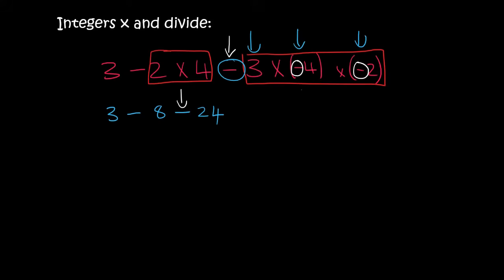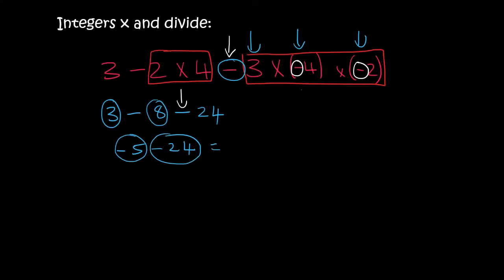Now we can move from left to right, only plussing and minussing. So if you have 3 rand and then you have to pay a total of 8 rand, you're going to have minus 5. If you have minus 5 rand and then you have to pay someone another 24 rand, you are going to be very negative — minus 29.